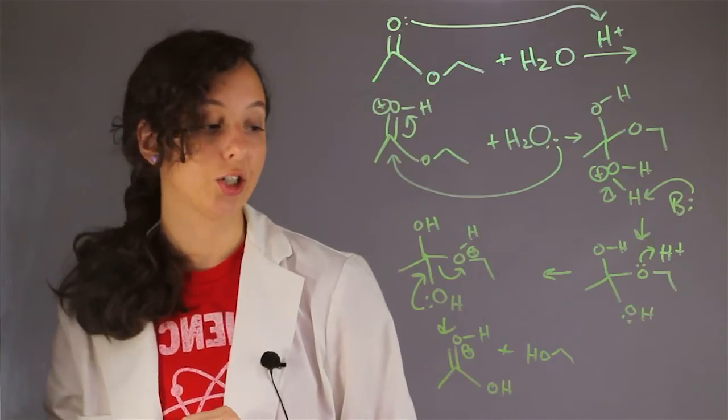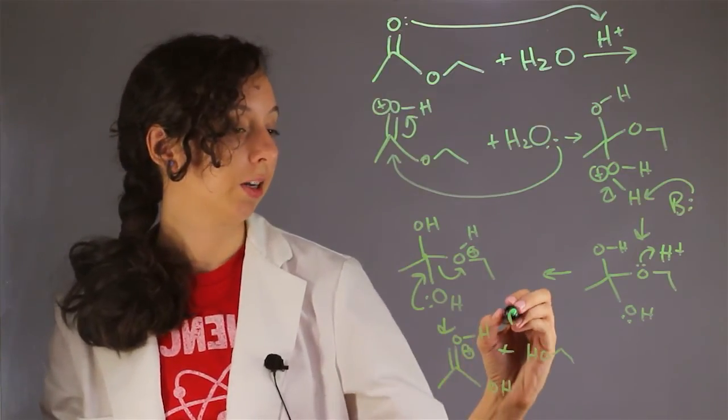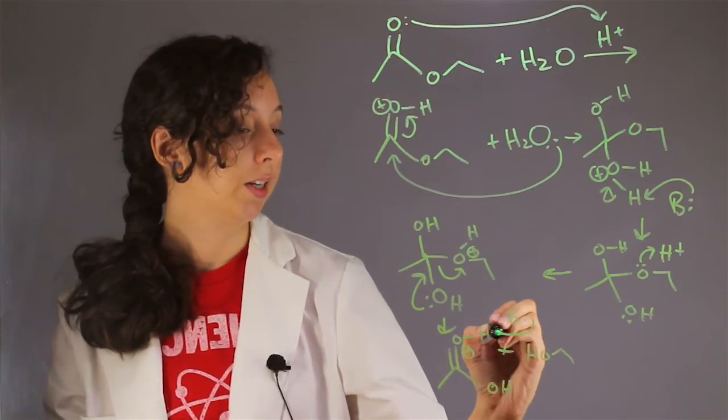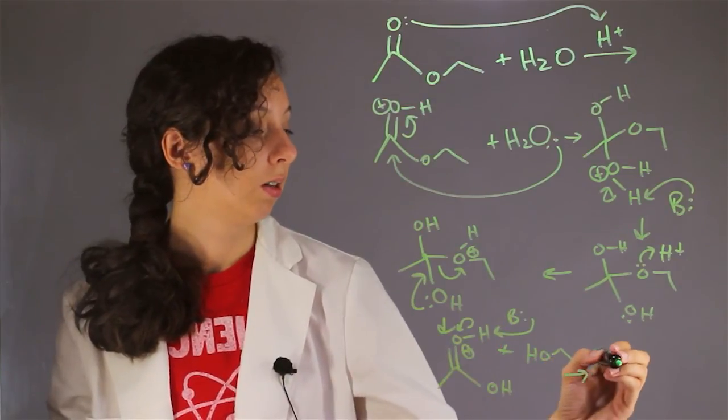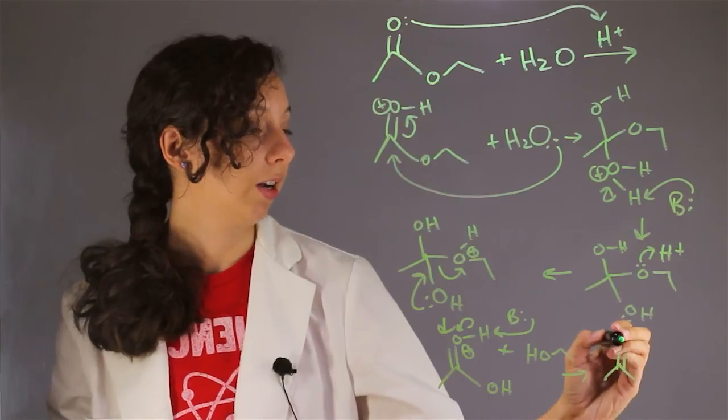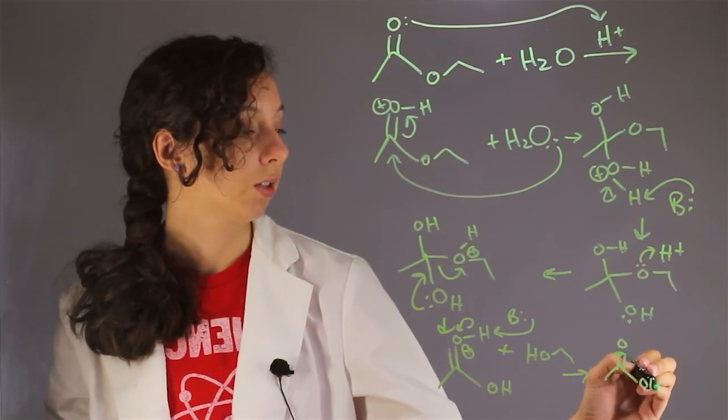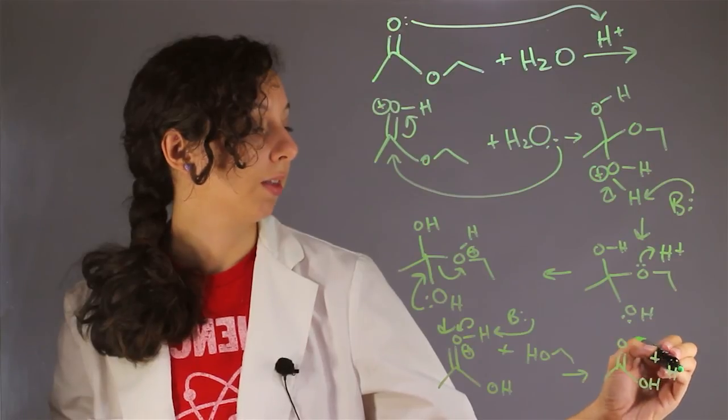And the last step of our reaction is we're just going to have another generic base come in and take away this hydrogen, taking away the positive charge. So our final product of hydrolysis is this carboxylic acid plus ethanol.